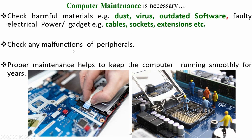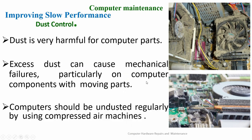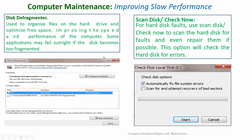Check for any malfunctions of peripherals, and program maintenance helps the computer run smoothly. Dust control is very important — dust is harmful for computer parts and excess dust can cause mechanical failures, particularly in components with moving parts. Computers should be cleaned of dust regularly using compressed air machines like electrical blowers. Disk defragmenter is used to organize files on the hard drive and optimize free space, improving the speed and performance of the computer.